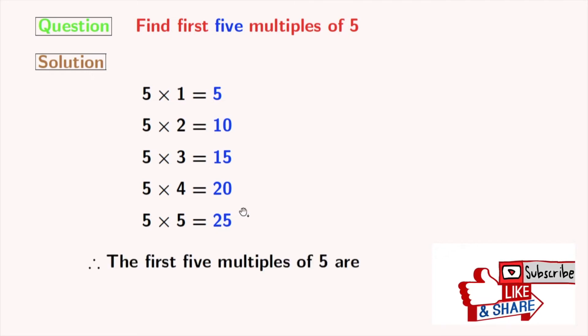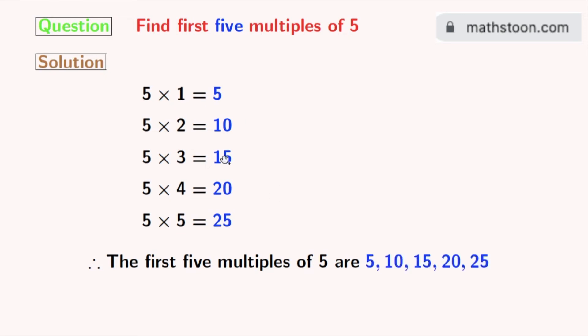So, the first 5 multiples of 5 are the blue colored numbers. These are 5, 10, 15, 20 and 25.